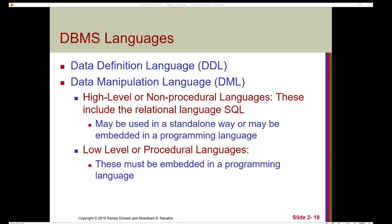To define what's in the database, we use a data definition language, or DDL. This language includes procedures like adding and dropping tables from the database. We also use a data manipulation language, or DML, to communicate with the database. These are high-level or non-procedural languages that include the relational language SQL, which can be used in a standalone way or embedded in a programming language like Python or Java. There are also low-level or procedural languages that must be embedded in a programming language. The DML, like SQL, is used to conduct queries to retrieve information from the database.